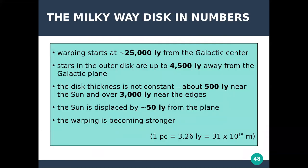To summarize the Milky Way disk in numbers: the warping of the disk starts at 25,000 light years from the galactic center. Stars in the outer disk are displaced from the plane by up to 4,500 light years. The disk thickness is not constant — this is flaring — about 500 light years near the sun and over 3,000 light years at the disk edges. The sun is displaced by 50 light years from the galactic plane. From kinematics, we know the warping is becoming stronger.